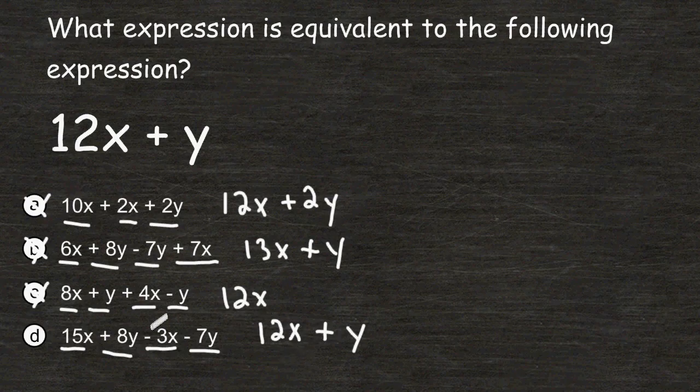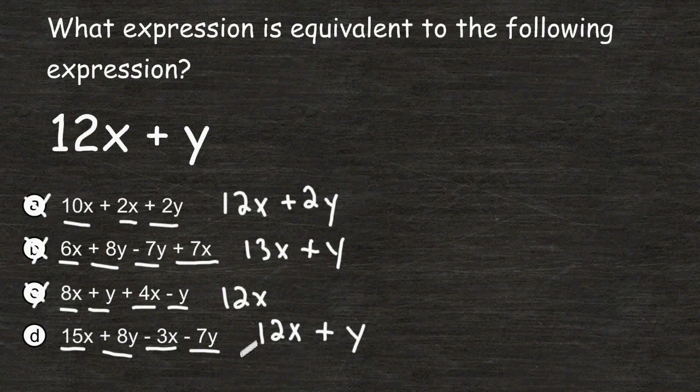So we can see that choice D is in fact the answer because when you simplify the expression for choice D we do come up with 12x plus y. So this is the correct choice.